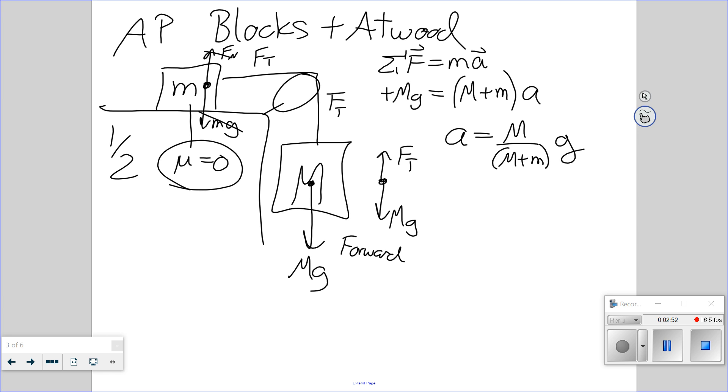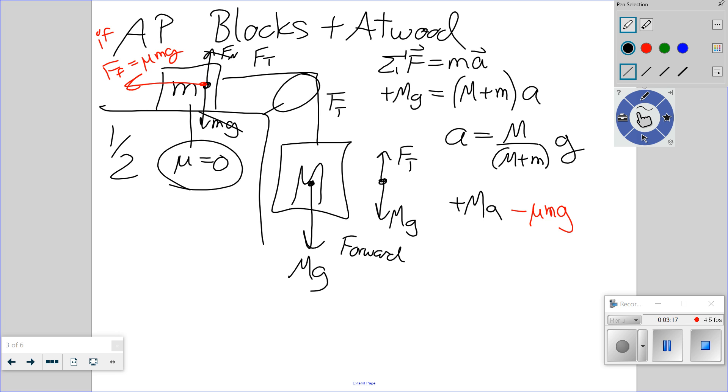And if we had some friction, if we had friction, but if force of friction is mu mg, then we would just subtract it over here. We would have minus mu little mg, plus big mg, we could factor out our g's if we wanted. Big m plus little m equals a. If we have it.